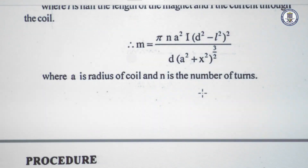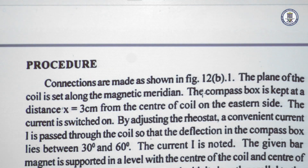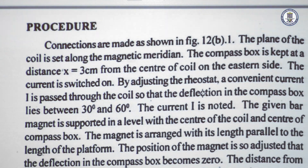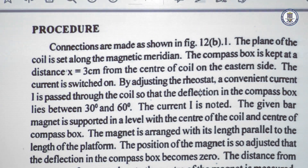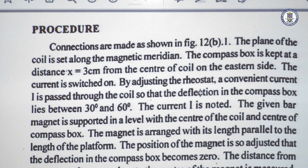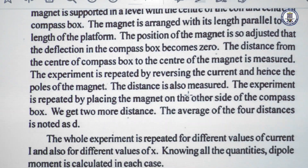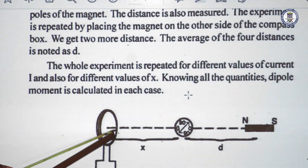Coming to the procedure: initially we arrange the circular coil with its plane along the magnetic meridian. For that, the compass box is rotated so that the zero-zero line is along the plane of the coil, then the whole apparatus is rotated so that the aluminum pointer reads zero-zero. Then the compass box is placed at a distance of say 3 or 6 centimeters from the center of the coil, and a current is passed such that the deflection is between 30 and 60 degrees.